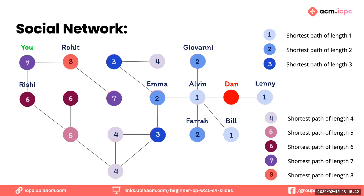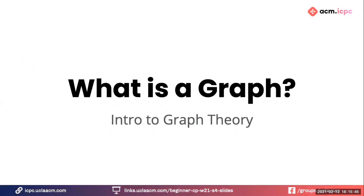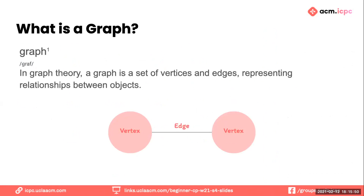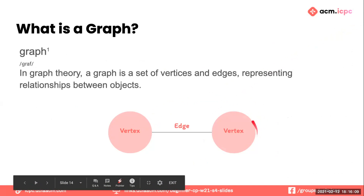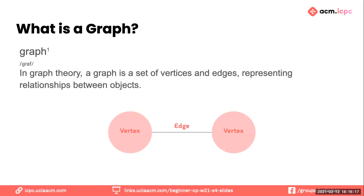With this example under our belts, let's dive into what a graph is. In graph theory, a graph is a set of vertices and edges representing relationships between objects. We have a vertex connected to another vertex by an edge. A vertex may also be called a node — you'll hear both terms used interchangeably. To be consistent, I'll use the term vertex throughout.